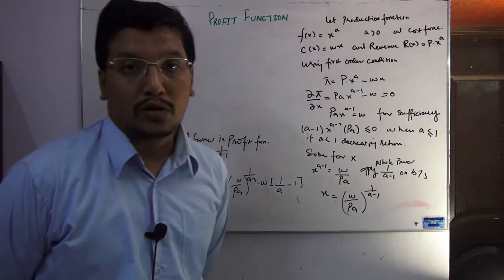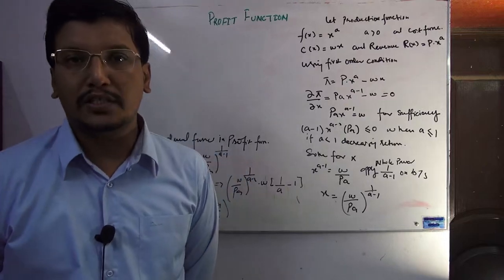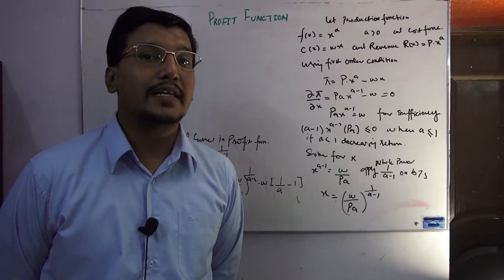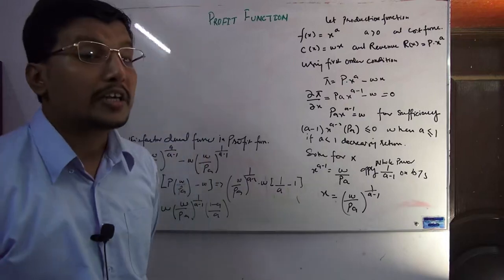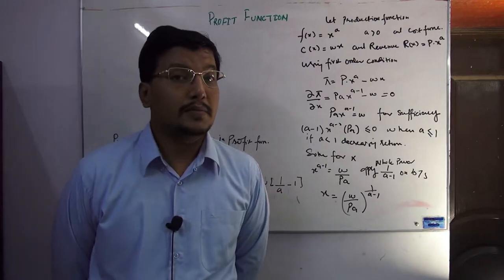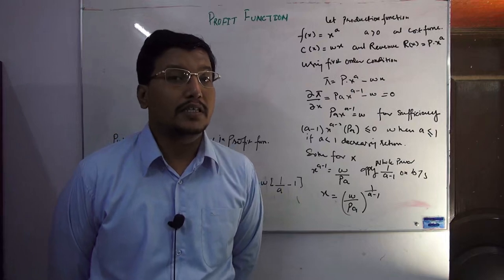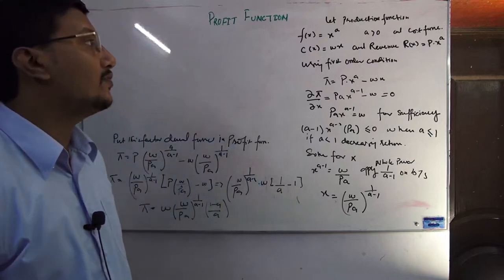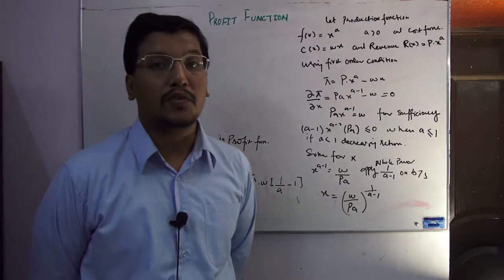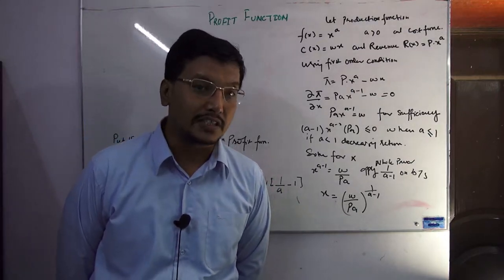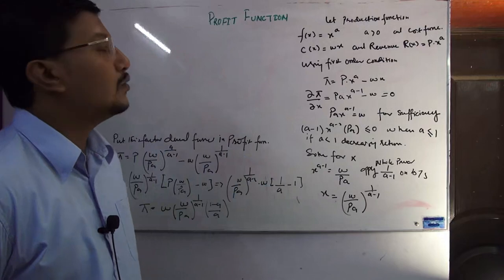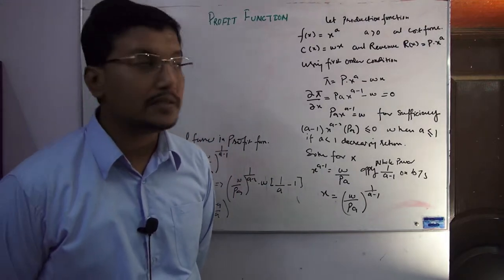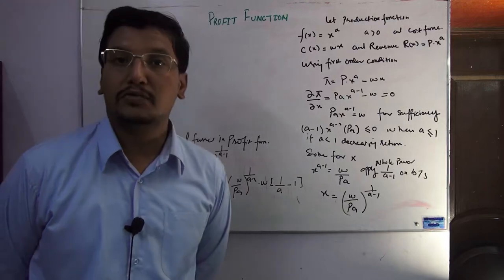Now we are going a little bit further. We are dealing with the mathematics and discussing what the production function is. This is basically a topic at the advanced level of economics, in which we will find out the firm's profit function and the maximization condition — using the factor demand function, necessary condition, and sufficient condition — to derive the firm's profit function.